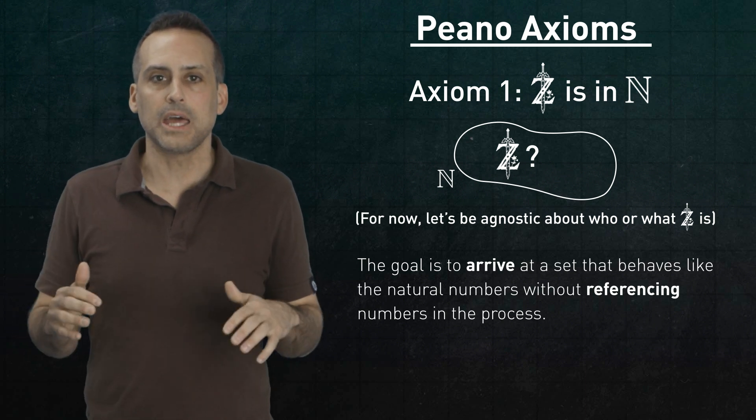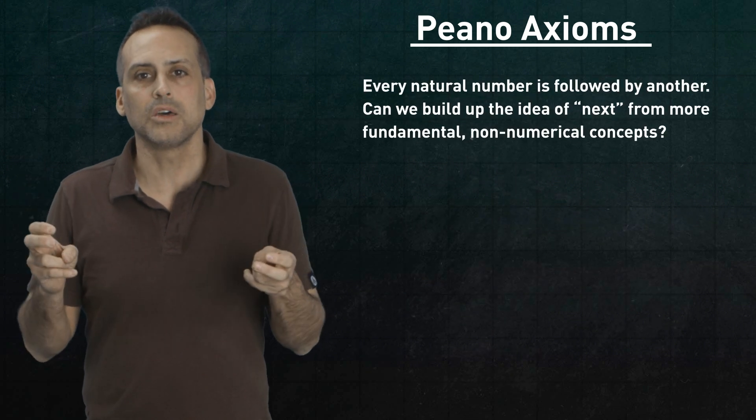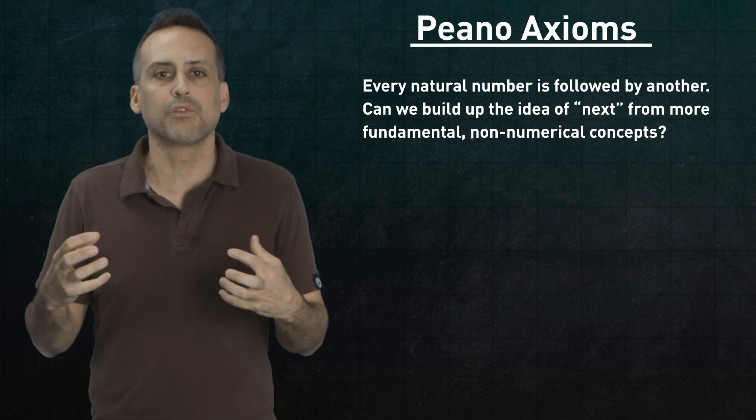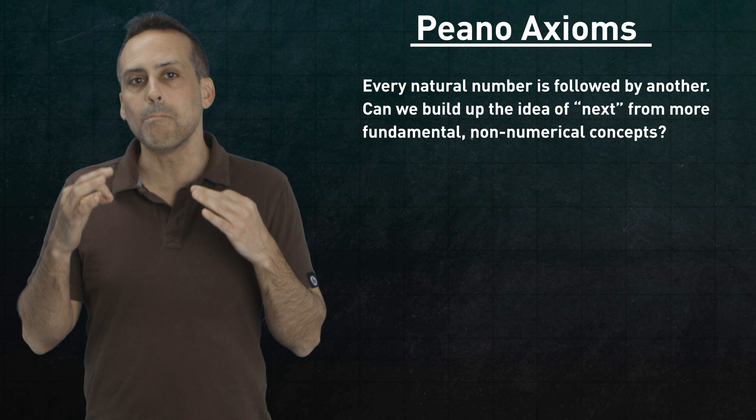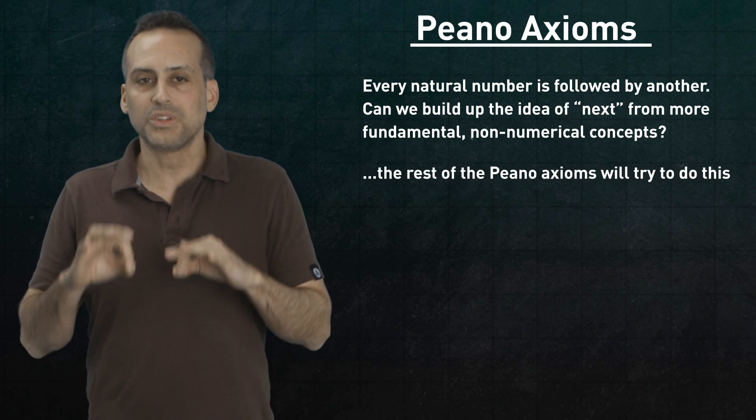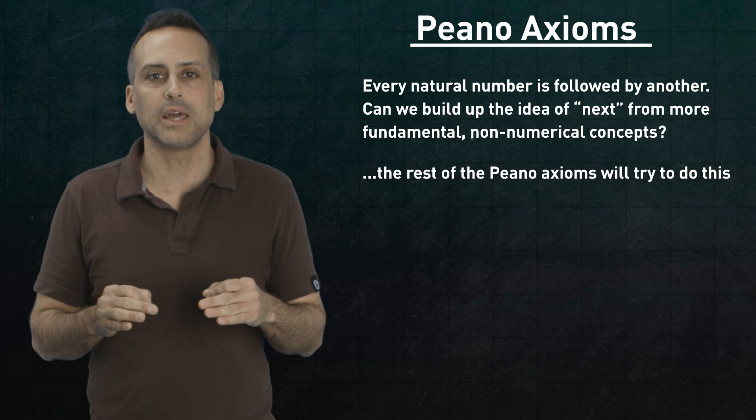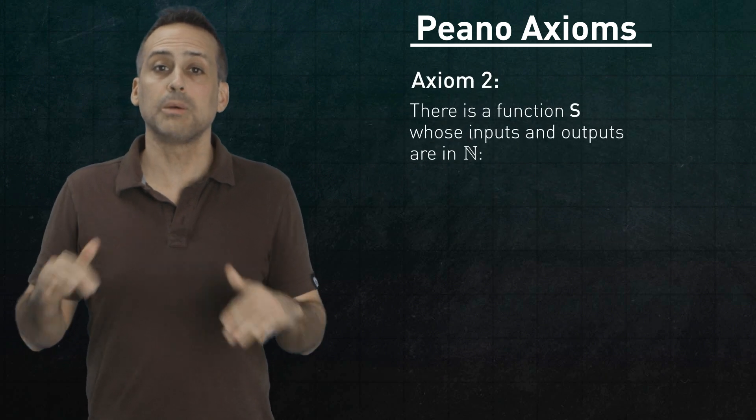Now, to populate the rest of n, we could just keep including the next element. But what is next? The whole notion of next is loaded with conceptual baggage that can be hard to disentangle from your preexisting notions of counting and numbers. So that's what the remaining axioms will do. They will define next using only more basic and non-numerical ideas. Let's see how that works, starting with axiom 2.